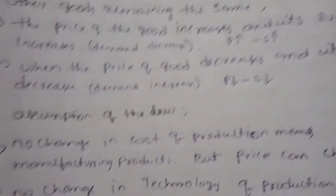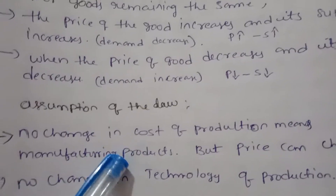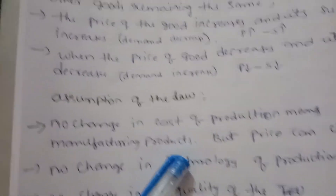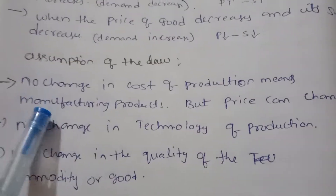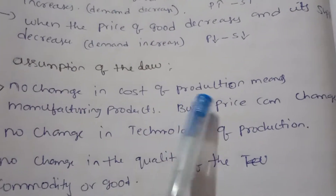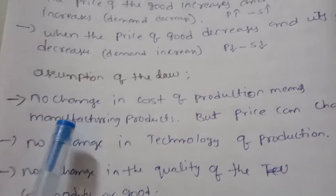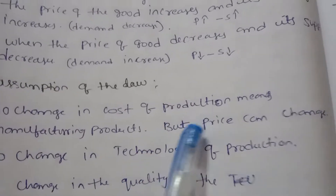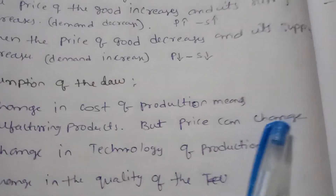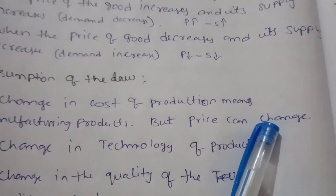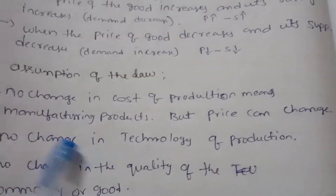Assumptions of the law: no change in cost of production. This means manufacturing products, but price can change.